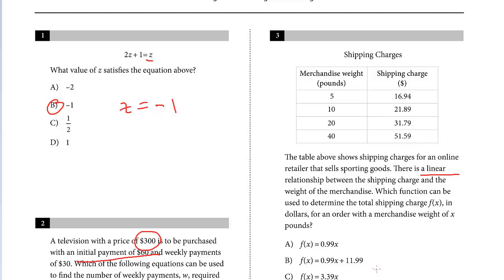Whenever you have to identify the equation, always find the slope first. That's what I would recommend. Let's look at the weight—here we have an increase of 5 pounds. Looking at the shipping charges, the increase is really close to $5, from almost $17 to almost $22, so this went up by 5.